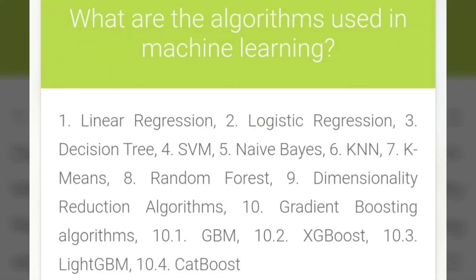What are the algorithms used in machine learning? The algorithms used in machine learning are Linear Regression, Logistic Regression, Decision Tree, SVM, Naive Bayes, KNN, K-means, Random Forest, Dimensionality Reduction Algorithms, Gradient Boosting Algorithms, GBM, XGBoost, LightGBoost, and CatBoost.